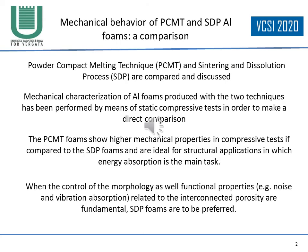Different aluminum foam production methods have been compared and discussed in this work: the powder compact melting technique and the sintering and dissolution process. Mechanical characterization of aluminum foams produced with these techniques has been performed by means of static compressive tests in order to make a comparison between them.